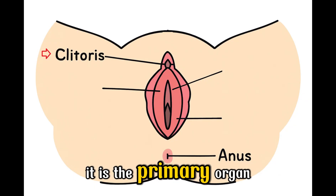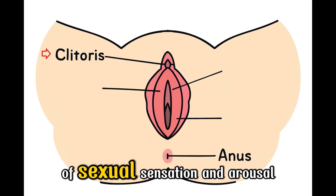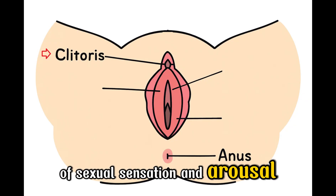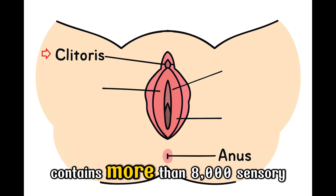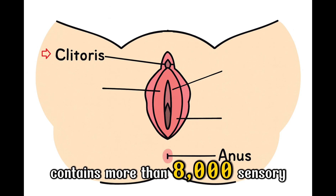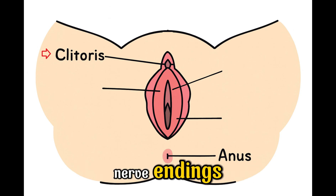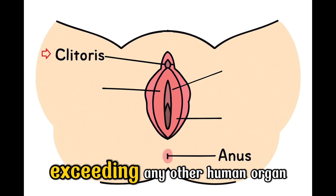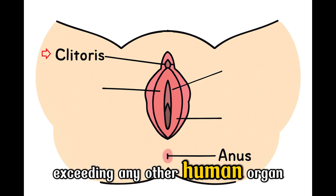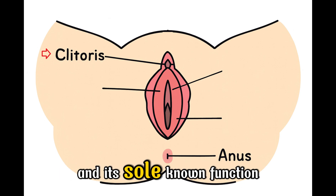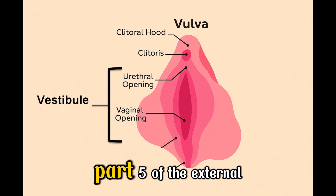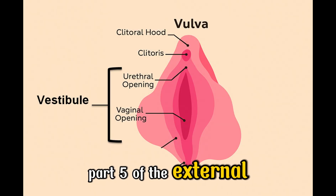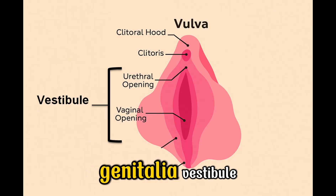It is the primary organ of sexual sensation and arousal. The clitoris contains more than 8,000 sensory nerve endings, exceeding any other human organ, and its sole known function is pleasure.